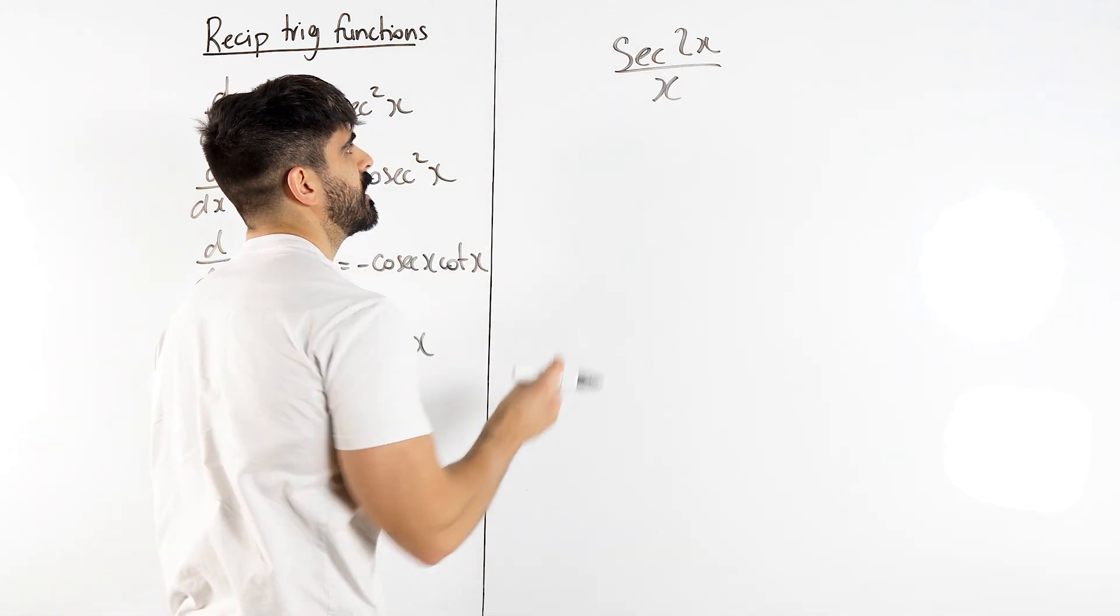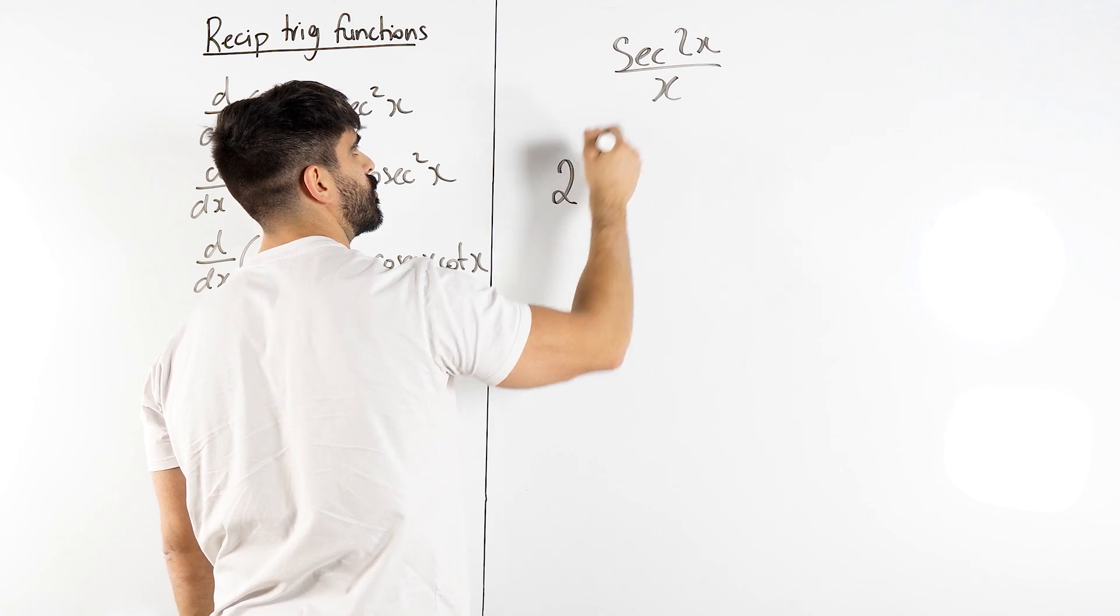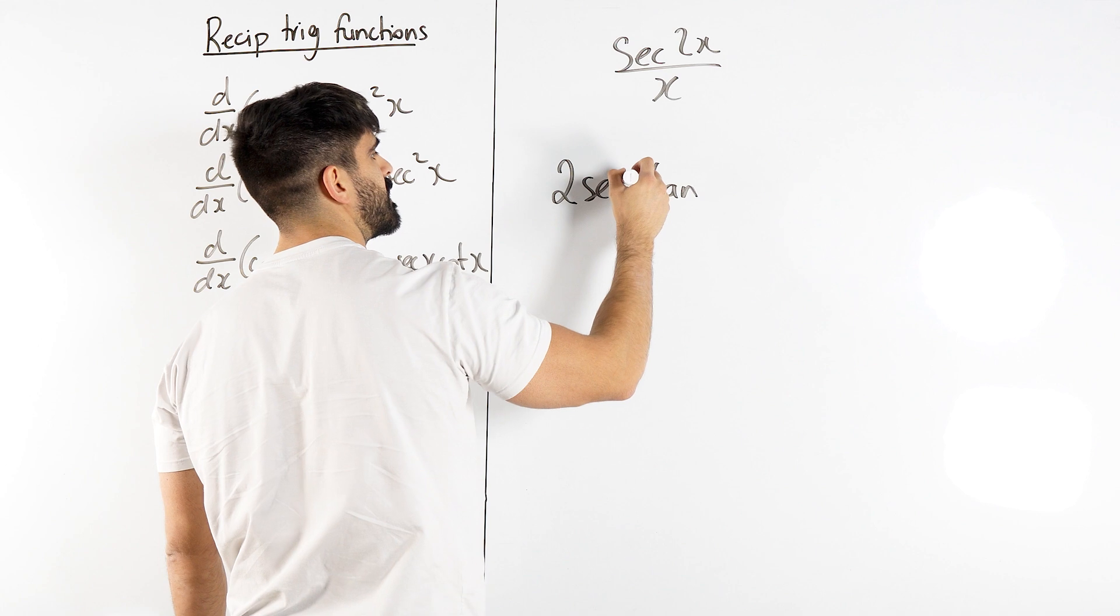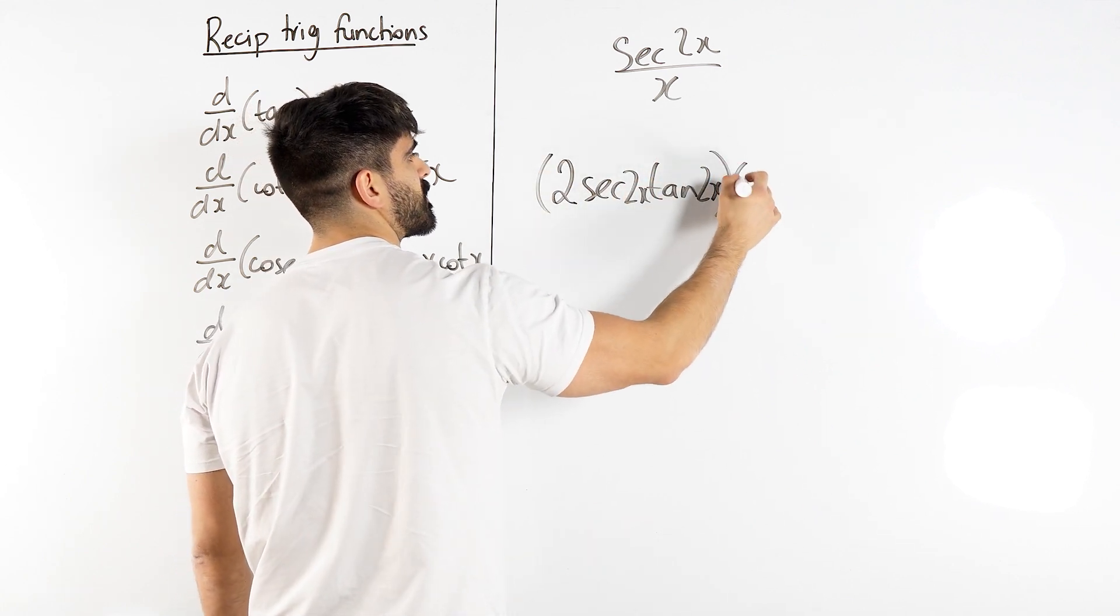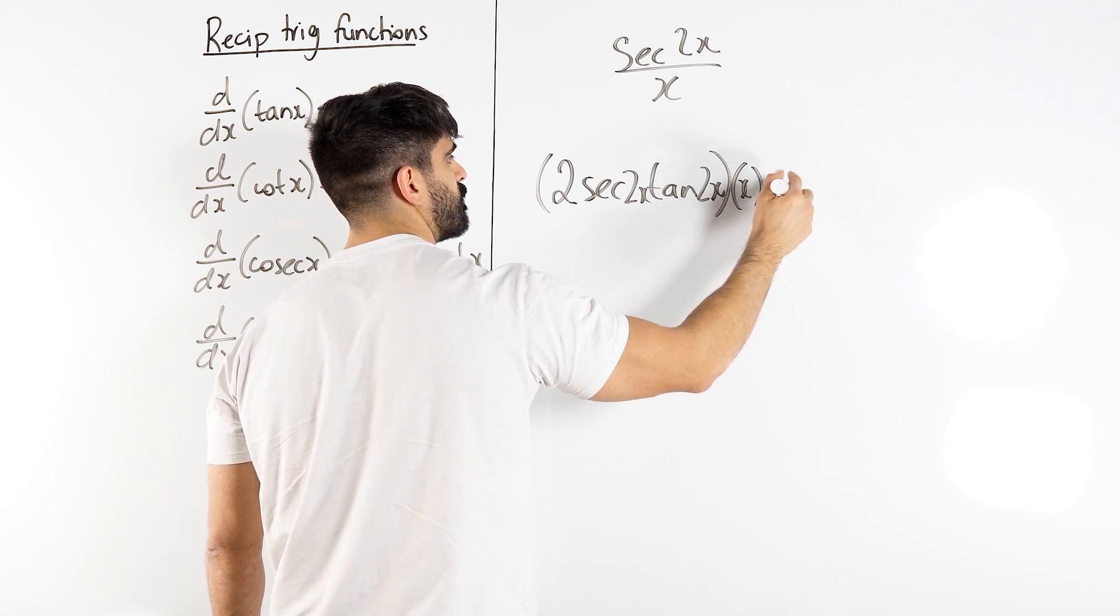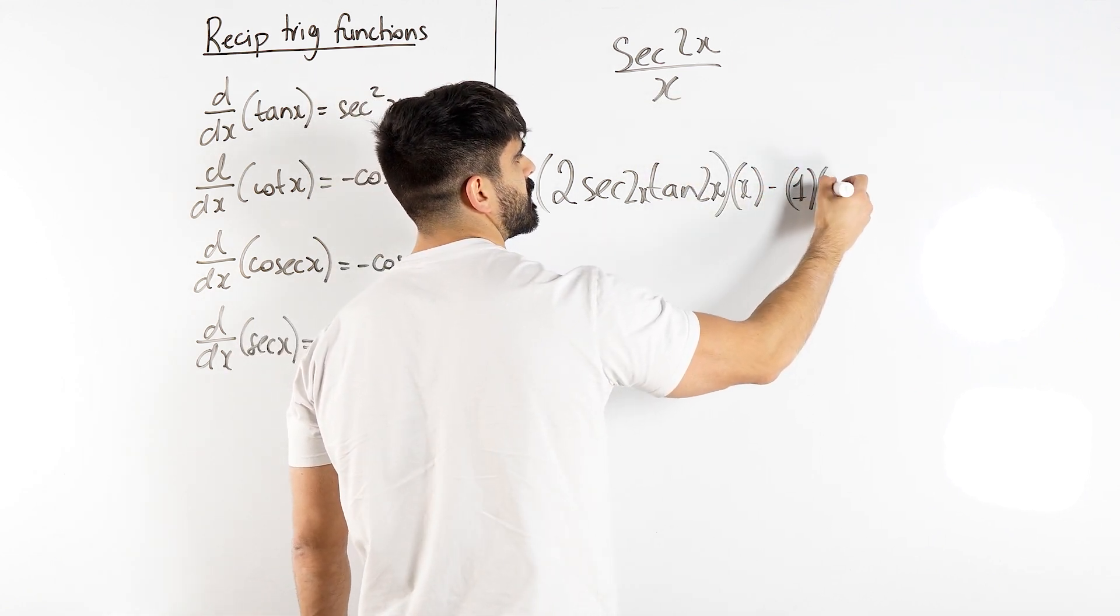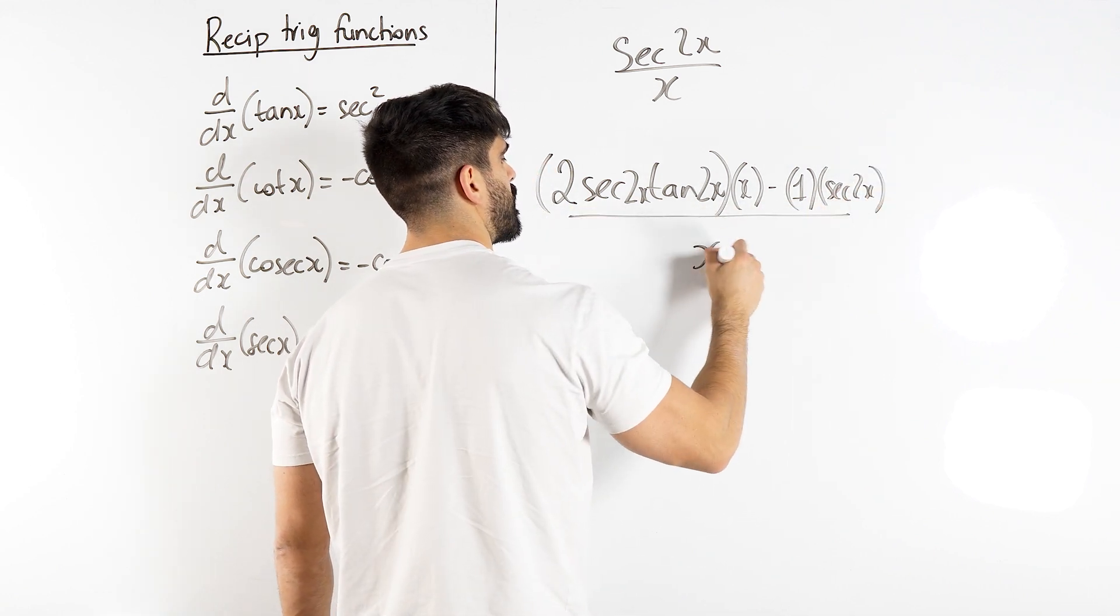We differentiate the top. To differentiate sec 2x, you differentiate the angle first. 2x differentiates to 2. Sec goes to sec tan. Remember the angle has to stay the same. So differentiate the top times the bottom minus differentiate the bottom, x just differentiates to 1, times the top all over the bottom squared.